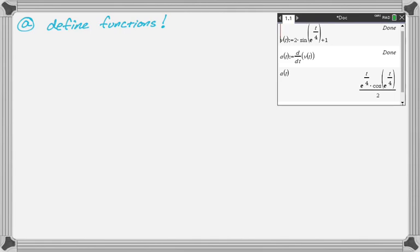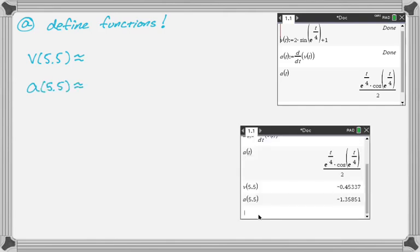So is the speed of the particle increasing or decreasing at t equals 5.5? I'm going to have to find the velocity at 5.5, and I'm going to have to find the acceleration at 5.5. And so, again, calculator, so just punch them in. And let me jot those down. So three decimal places always. This question is a little weird because it doesn't give you units for the velocity and acceleration.